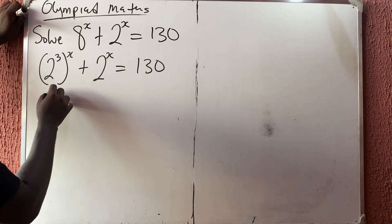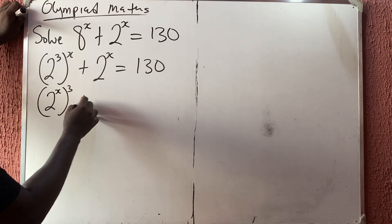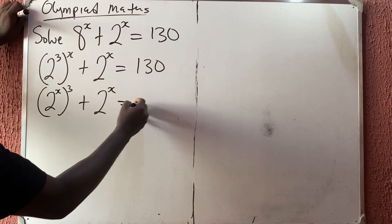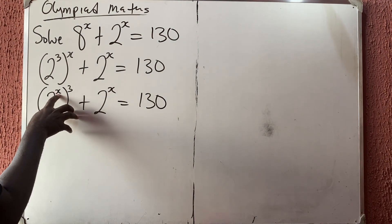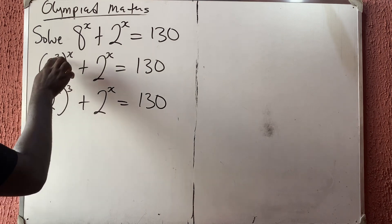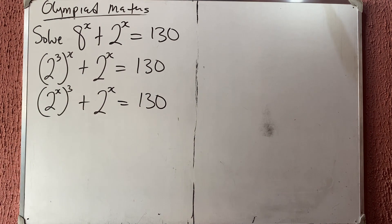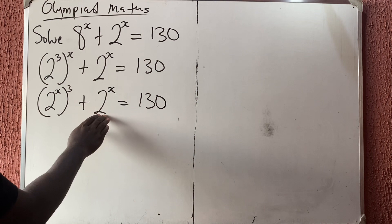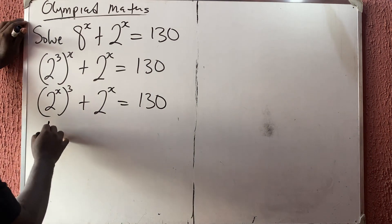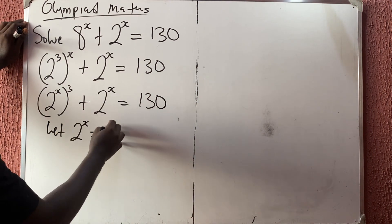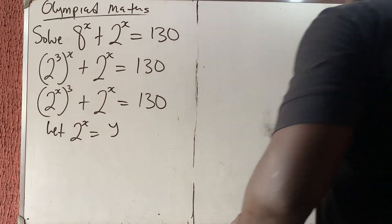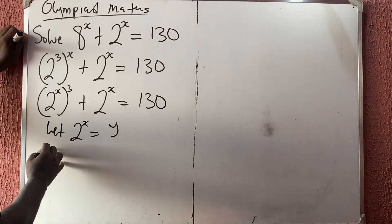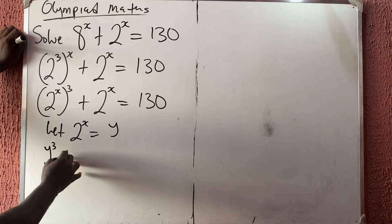I'm going to rewrite this as 2 raised to power x, all raised to power 3, plus 2 raised to power x equals 1/3. The reason is I want the same base expression in both terms — x times 3 is 3x, and 3 times x is 3x, so nothing changed. Now let 2 raised to power x equal y, so wherever I see 2 raised to power x I can substitute y.